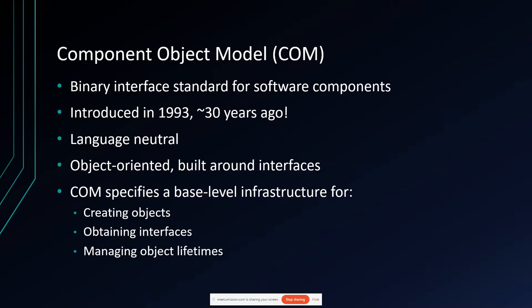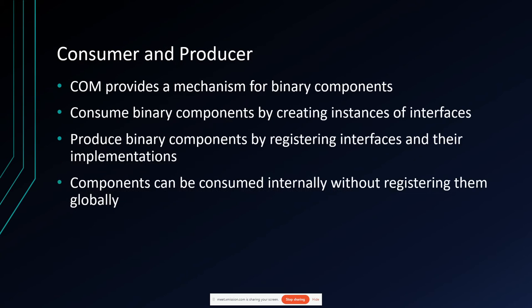COM specifies a baseline level of infrastructure for getting objects — creating an instance, obtaining interfaces. An object may implement one or more interfaces, and every object is required to implement IUnknown, from which you can query for other interfaces that object may implement. COM also specifies infrastructure for managing object lifetimes via reference counting. In COM you're both a consumer and a producer of interfaces, and in more complex standards built on top of COM, sometimes the application implements an interface and acts as a sink, and other times the application consumes an interface where the system is the source.